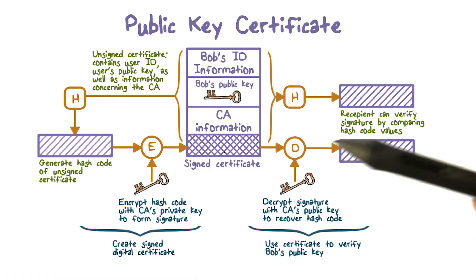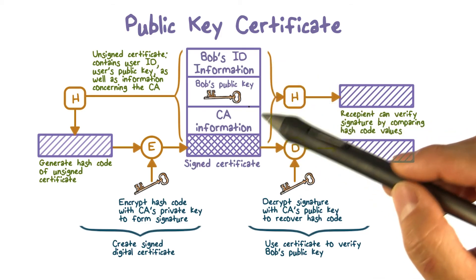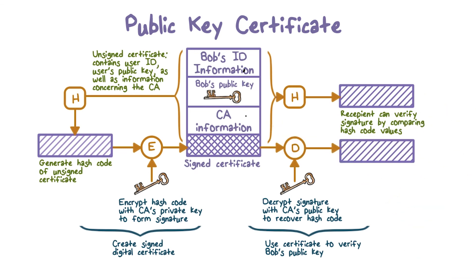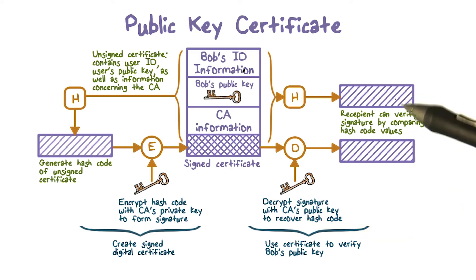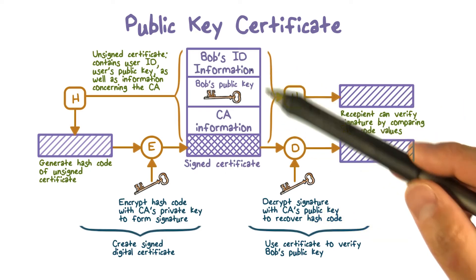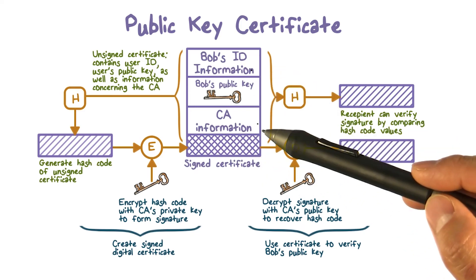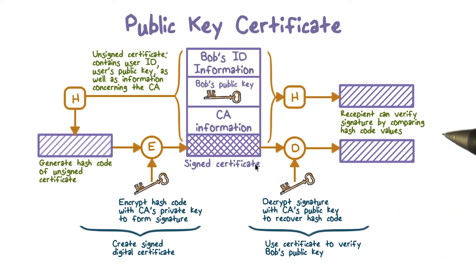That creates the certificate of Bob's public key. Now Bob can send this public key certificate to anybody, such as Alice. When Alice receives this public key certificate, she can first extract the clear text information of Bob's ID, public key, and other information, and then she will hash this data. Alice would also use the certificate authority's public key to decrypt and verify the signature, and compare these two hash values. If they match, that means this public key has been properly signed and validated by the CA.